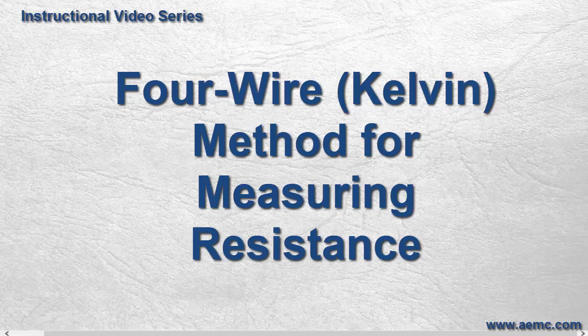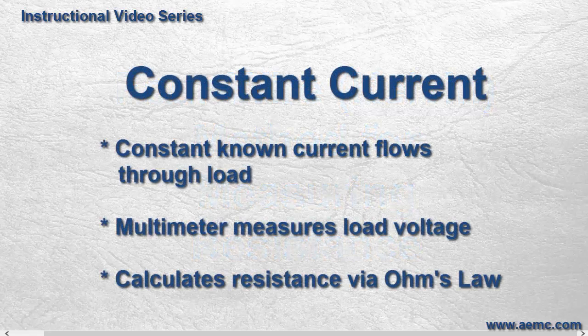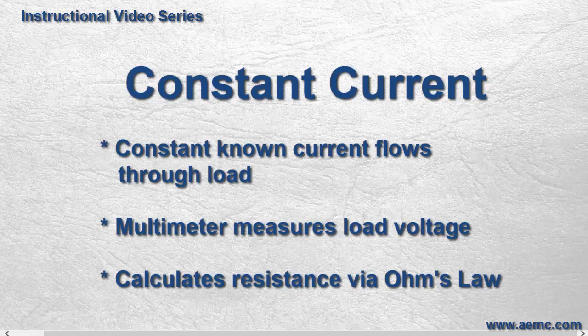To measure the resistance or impedance of a load, multimeters often use a technique known as constant current. In this method, a source current of constant and known amperage flows across the load under test. The multimeter simultaneously measures the voltage across the load and employs Ohm's law to calculate the resistance.